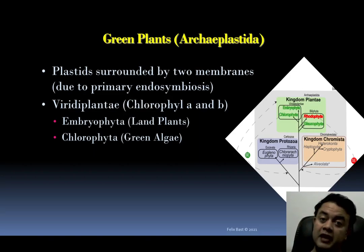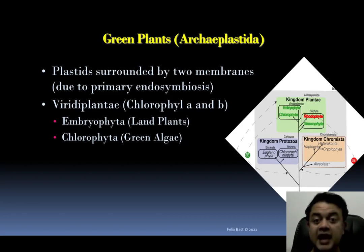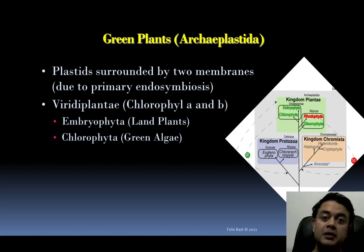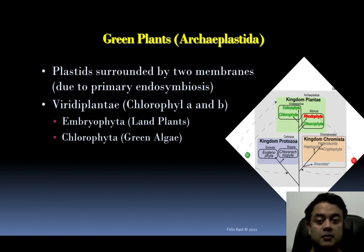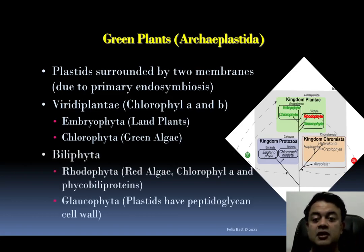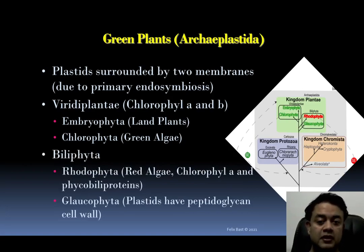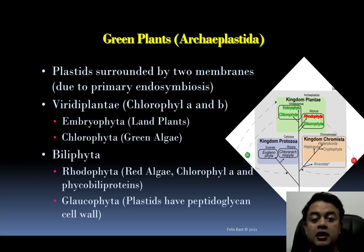Viridiplantae has chlorophyll a and b — not d. Chlorophyll a and b are the defining characteristics. Red algae have chlorophyll d in addition to a and b, but not c. Embryophytes (land plants) plus chlorophytes (green algae) together make up Viridiplantae. The second group, Biliphyta, includes Rhodophyta and Glaucophyta. Rhodophyta contains chlorophyll a and phycobiliproteins.